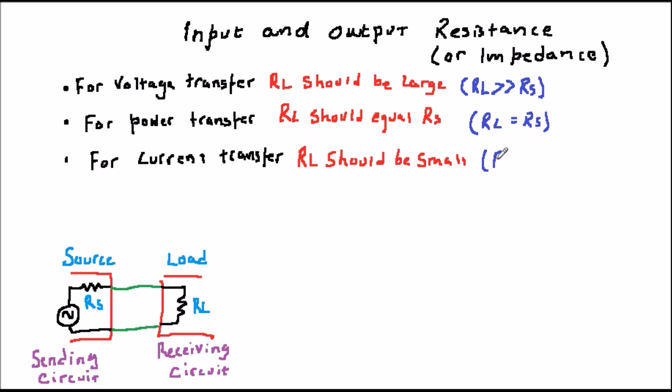Finally, it is less common to need current transfer, but this is just the opposite of the voltage case. For good current transfer, R in should be small, or to put it more precisely, R in should be much smaller than R out, where R out is the output resistance of the circuit.